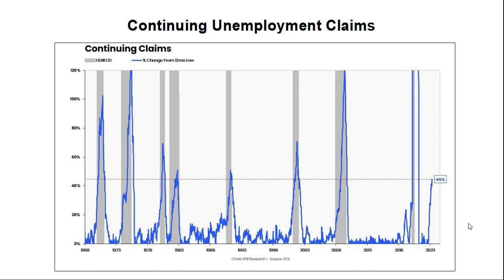Another indication is the spike in continuing unemployment claims. This chart looks at the percent change from the 12-month low in unemployment claims — we're now at a 45 percent increase. Each time this has happened at this level going back to 1968 we've had a recession. We can expect an onset of recession imminently; I think we're already in a recession, though the official recognition comes after the fact.